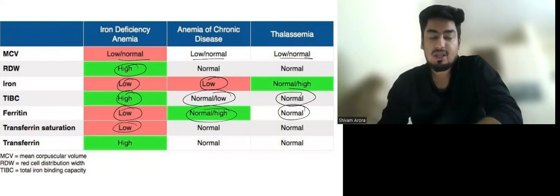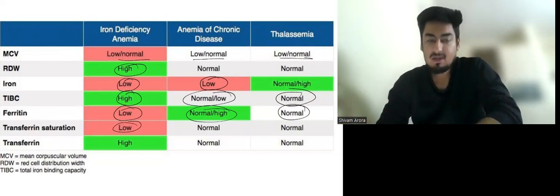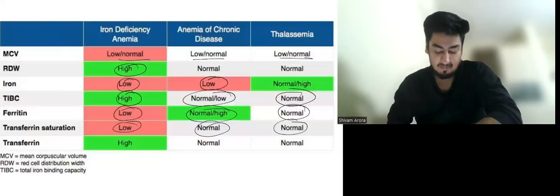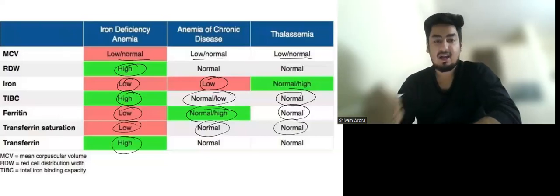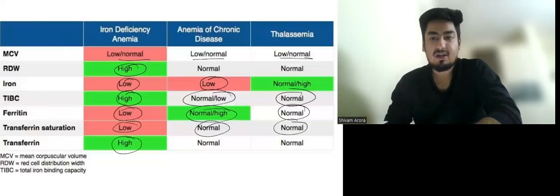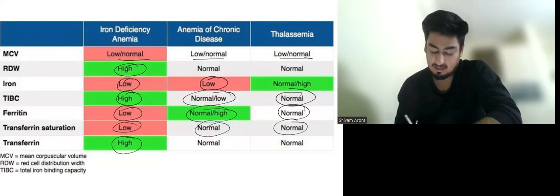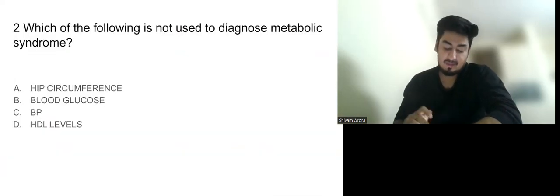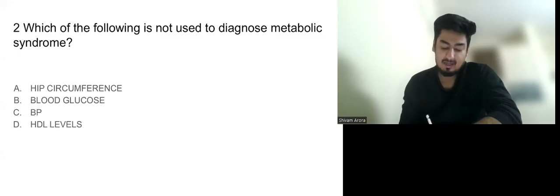Ferritin is low in iron deficiency anemia, while normal in anemia of chronic disease and thalassemia. Transferrin is high in iron deficiency anemia, normal in anemia of chronic disease, and normal in thalassemia. Now this is the second question, which came in INESET 2023.